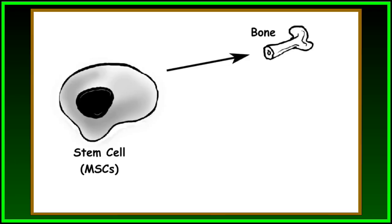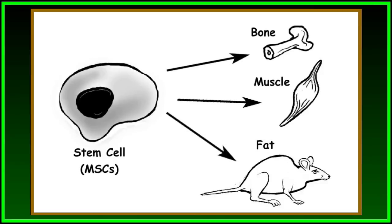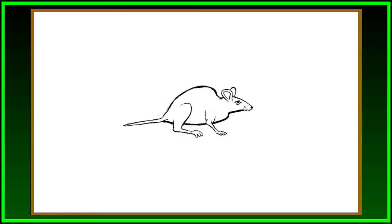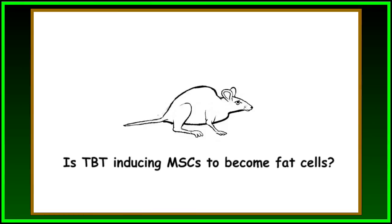MSCs are cells that can become many different kinds of tissue in the body, such as bone, cartilage, muscle, or fat, when stimulated one way or another. We already know that these MSCs can differentiate into fat cells following exposure to the PPAR gamma activator rosiglitazone. The million-dollar question is, do they? That is, is TBT inducing MSCs to become fat cells?